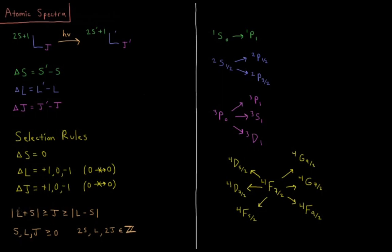We'll remind ourselves that the values of j that are allowed for a term symbol are going from the absolute value of l plus s to the absolute value of l minus s. s, l, and j are all greater than 0, and l is an integer, and s and j are required to be integers or half integers.